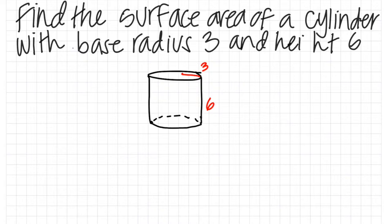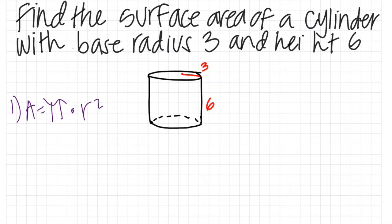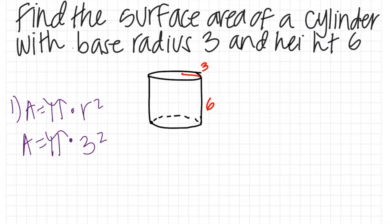Our next problem is finding the surface area of a cylinder with base radius 3 and height 6. The formula for the area of a circle is A equals pi multiplied by r to the power of 2. We plug our values into the formula: A equals pi multiplied by 3 to the power of 2, which gives us 9π.